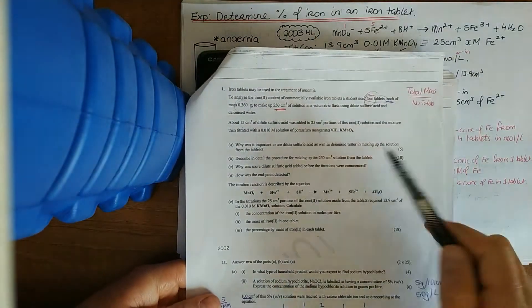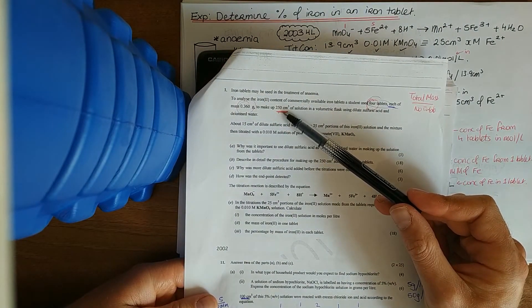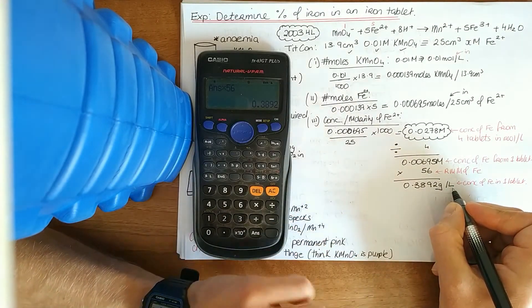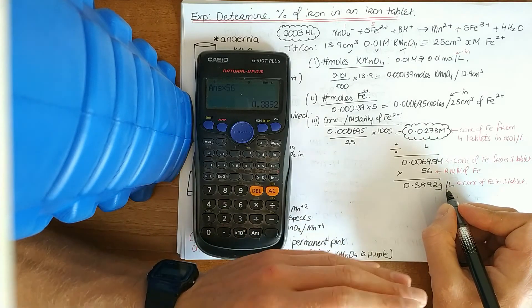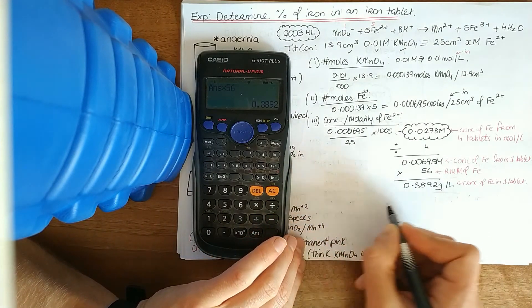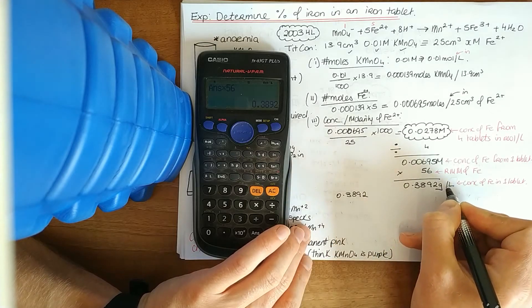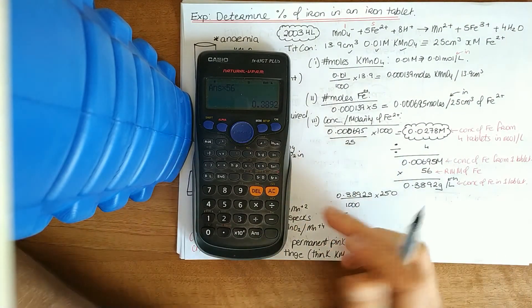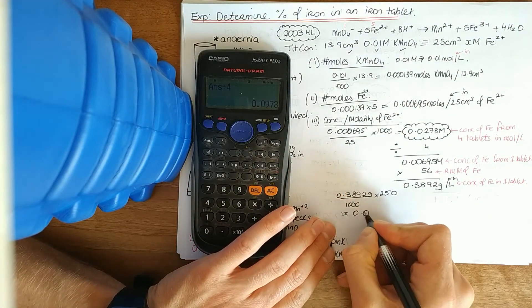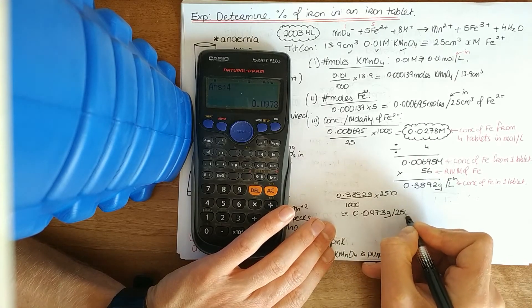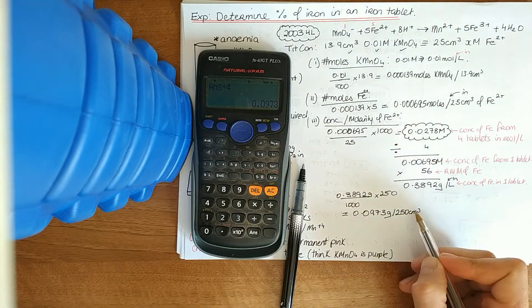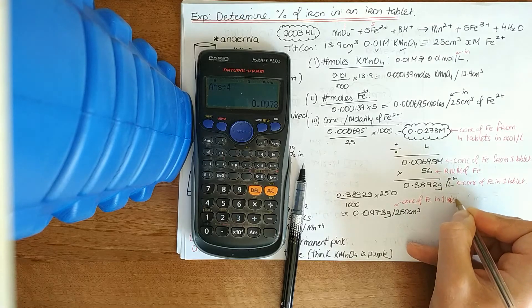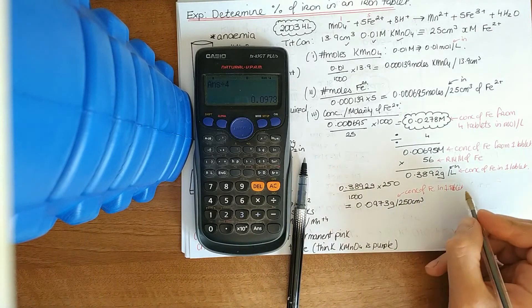We could bring this up to a litre, but to me that gets messy. I would bring this back to 250, comparing like with like. We've got the number of grams in a litre. A litre is a thousand centimetres cubed. To work out the number of grams in 250, I simply divide by four. 0.3892 over a thousand times 250. We get 0.0973 grams per 250 centimetres cubed. That is the concentration of iron in one tablet in 250. You can see the importance of keeping everything labelled here, because I myself will get confused half the time.